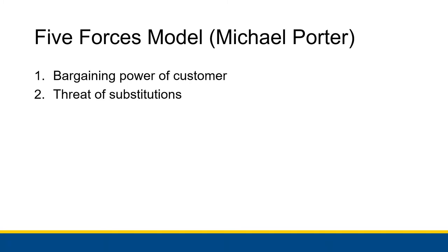The next force is the threat of substitutions. A strong threat of substitutions would mean that there are a lot of possible competing products out there on the market, whereas a weak force would be if your company happens to have the only version of that product. For example, in a grocery store, if you look at one type of cereal like Frosted Flakes, there are multiple different companies that offer Frosted Flakes — sometimes a generic version that goes for a little bit cheaper, and then the name brand Frosted Flakes from Kellogg's with Tony the Tiger. So there are substitutions here and the threat is non-zero.